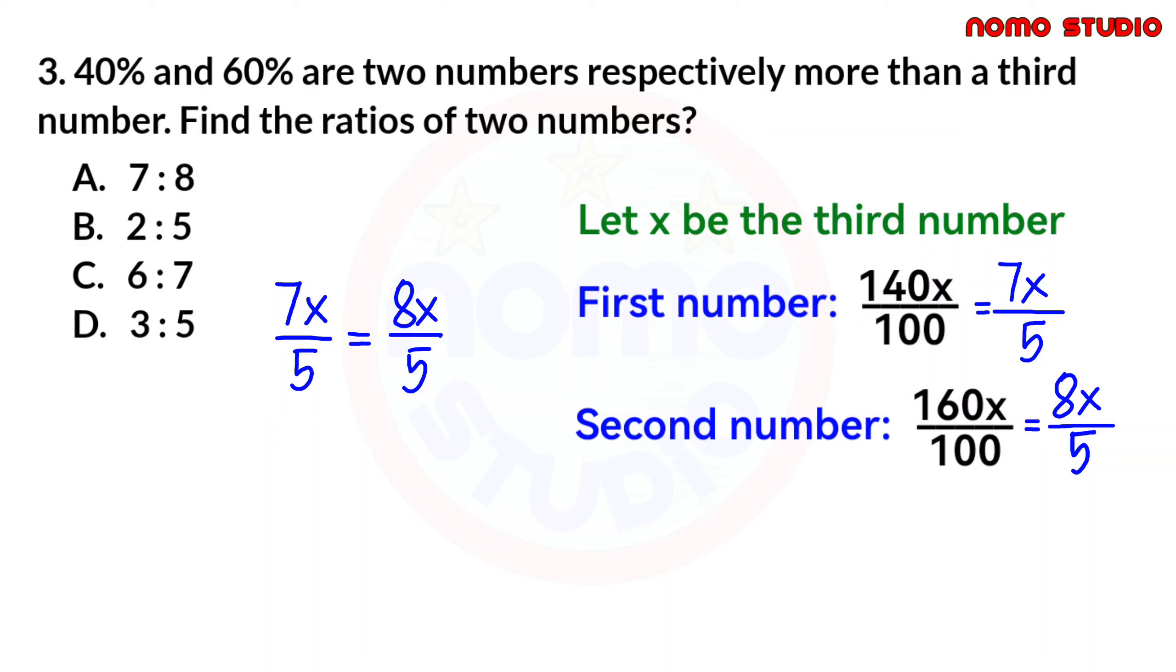Now, maybe some are confused about what cross multiply is. From the word itself, cross. So, it forms like a cross. So, we multiply this. We also multiply this. So, it's like a cross or like a butterfly, but never mind. By the way, even if we don't cross multiply, we can already see the answer, which is 7 and 8 or 7 is to 8, which is letter A.